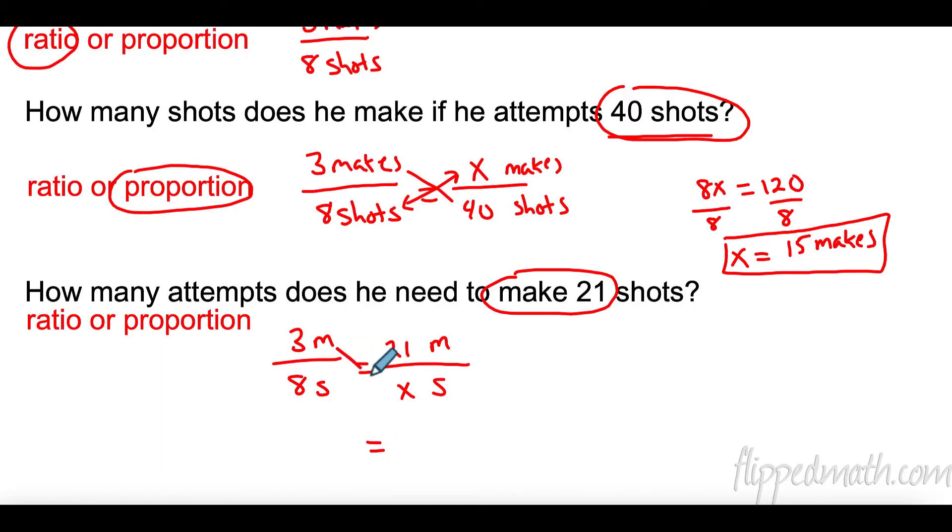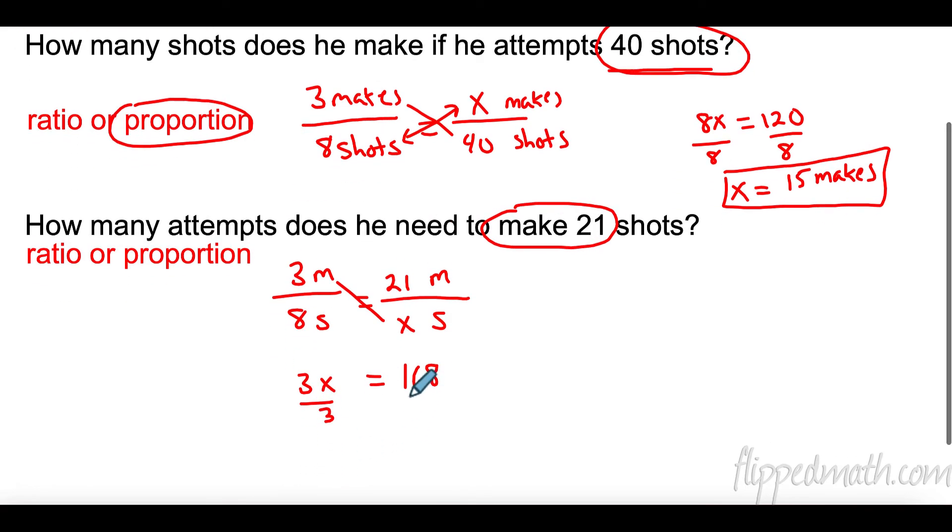I'm going to cross multiply again. 3 times X is 3X. 8 times 21 is 168. Divide both sides here by 3. And I get X is 56 shots. So, if I want Mr. Kelly to make 21 shots, that means he would have to shoot 56 shots.